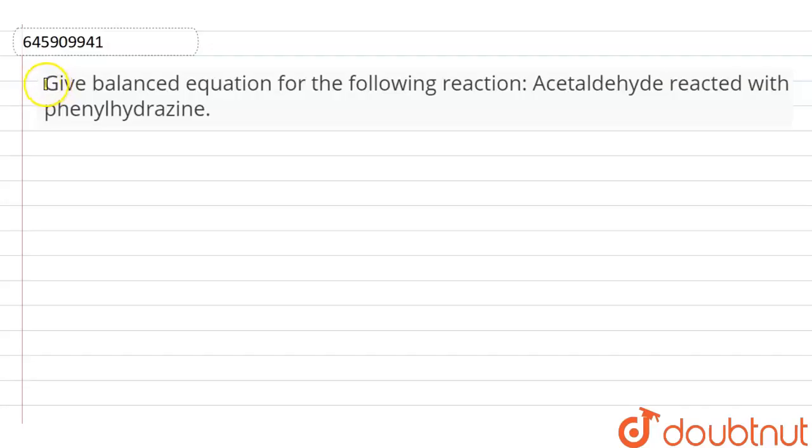Here is the question: give balanced equation for the following reaction - acetaldehyde reacted with phenylhydrazine. Now, firstly we draw the structure of acetaldehyde and that is CH3-CH=O. That is our acetaldehyde.